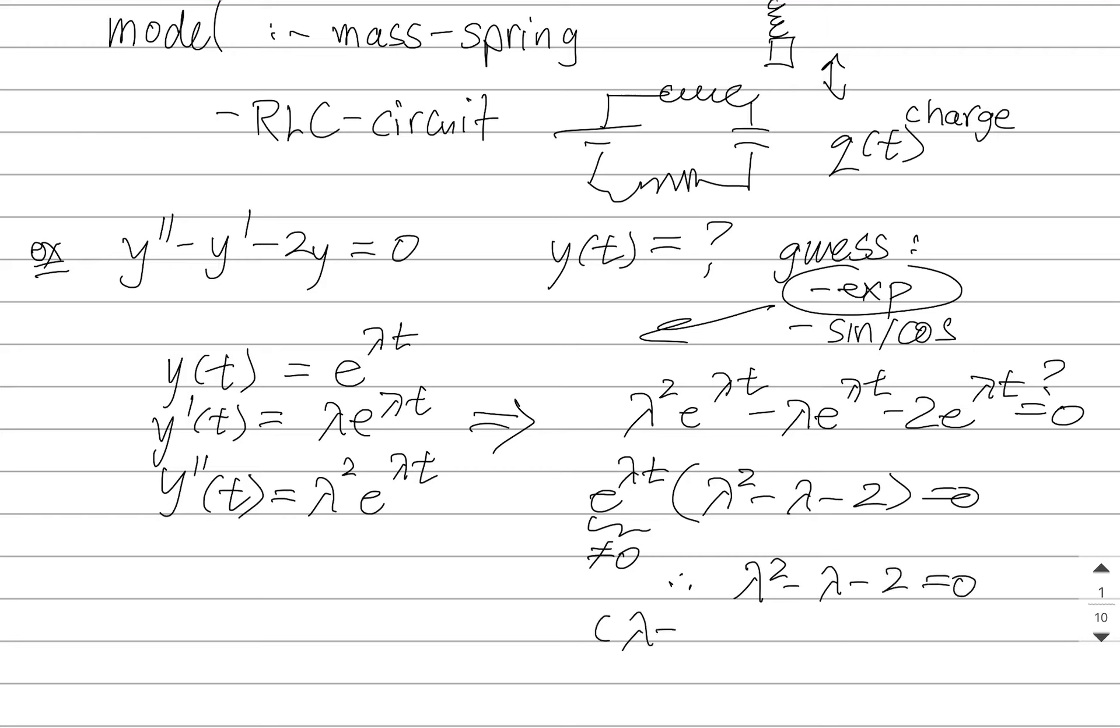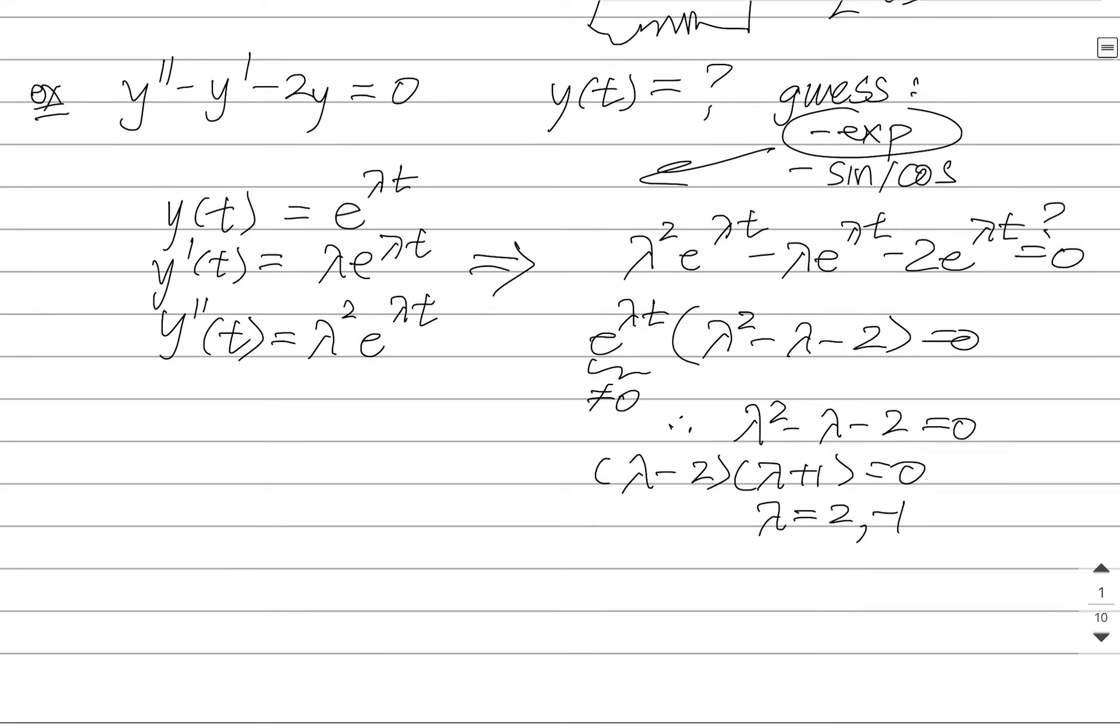So that means that I'll get lambda minus 2, lambda plus 1 gives me zero. So this will produce answers only for these two values of lambda. And that means that my solutions should be e to the 2t and e to the minus t.